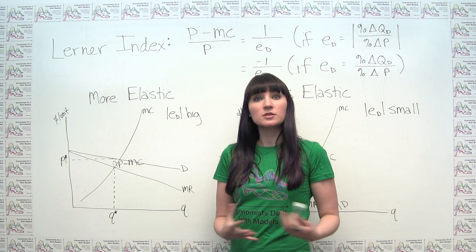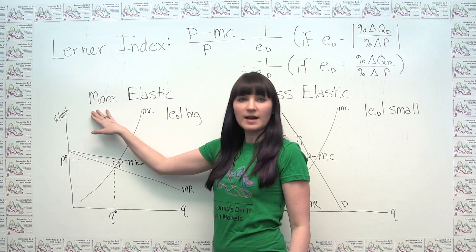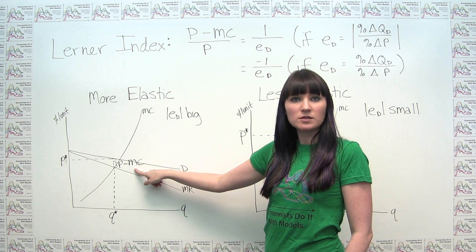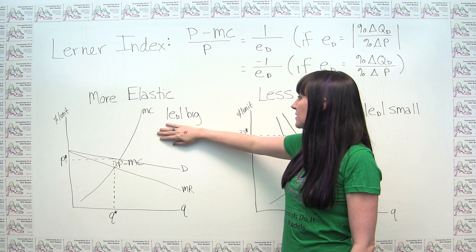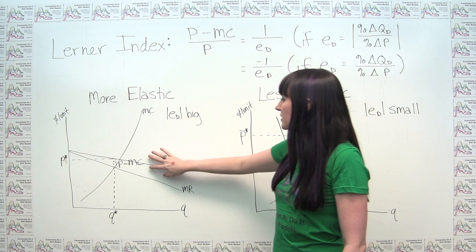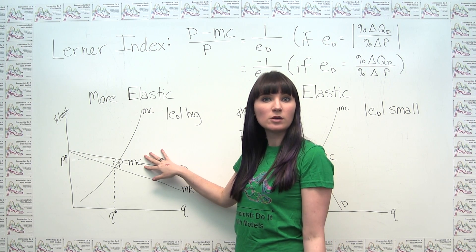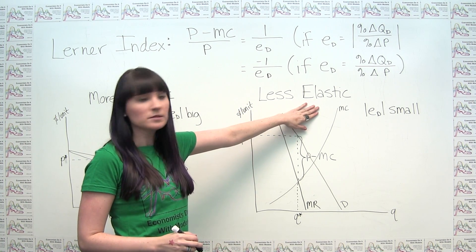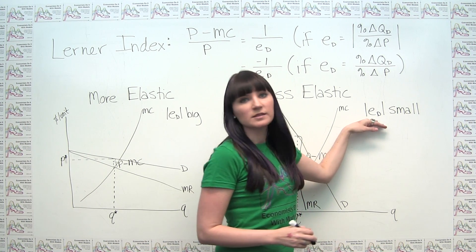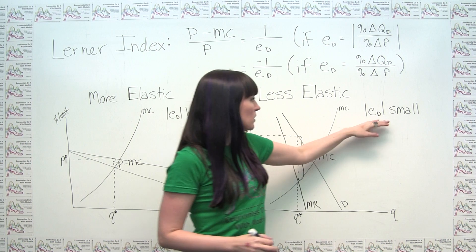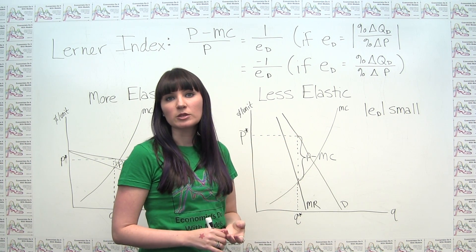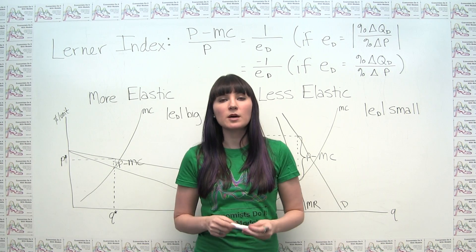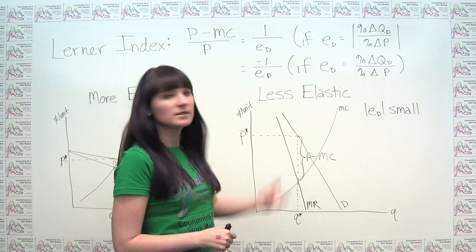So let's summarize what we've just deduced graphically. When we have more elastic demand, or less market power, we're not able to mark up price that much over marginal cost. So when we see an elasticity of demand number that's big, we see a price minus marginal cost number that's small. On the other hand, when we're facing more inelastic demand — when our elasticity of demand is small in absolute value — we see a large difference between price and marginal cost. This suggests that there's some sort of inverse relationship between markup over marginal cost and elasticity of demand.